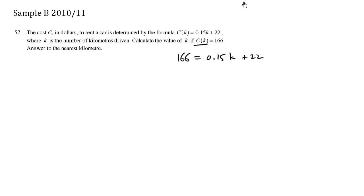I'm going to subtract 22 from both sides. So if I subtract 22 from this side, it disappears. And if I subtract 22 from this side, it becomes 144.